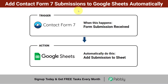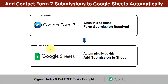How to add Contact Form 7 submissions to Google Sheets automatically. Every time a new form submission is received via Contact Form 7, all the form submission details will be added automatically to Google Sheets. In this way, you do not have to manually export the form submission data and paste it in Google Sheets again and again. If you want to automate this process, come with me and I will show you everything step by step.